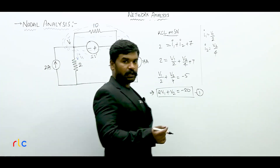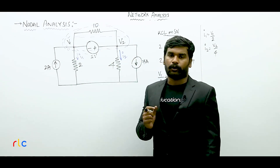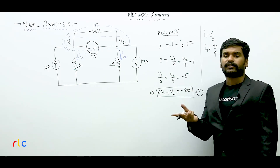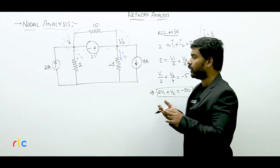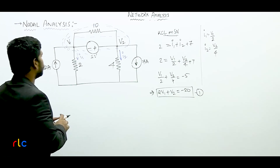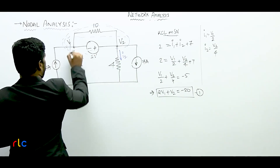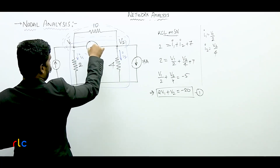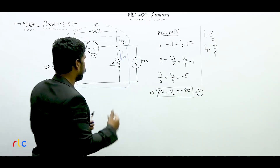Next, we have a second equation. If we look at this network, we have two non-reference nodes in the super node. To solve two variables, we need two equations — so one more equation is needed. We look at the super node mesh and apply KVL. We apply KVL in the closed loop of the super node. For the polarity, we start with V1.